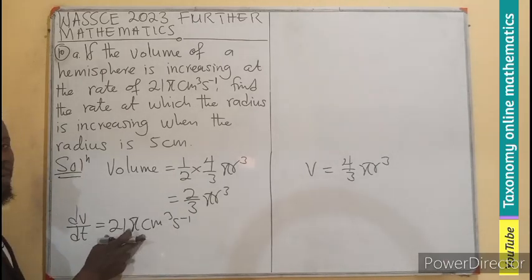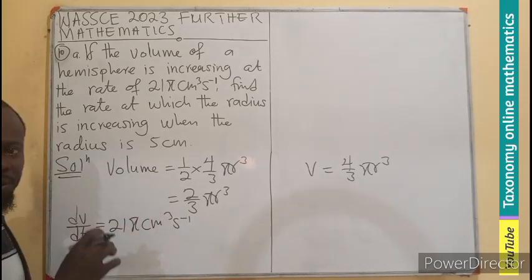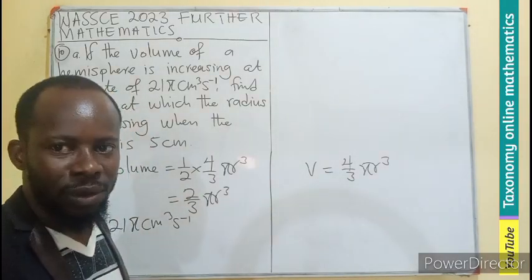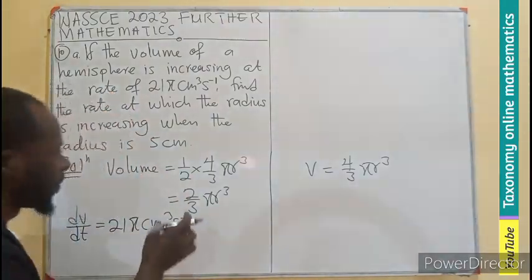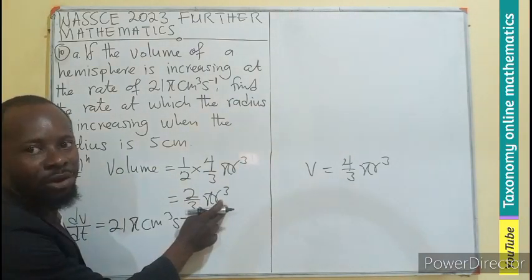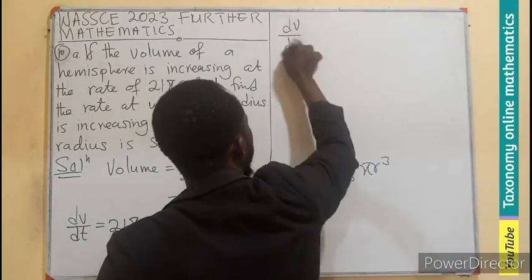Now, if this is the rate of change, then we are also looking for the radius. What is the connection between the volume and the radius? We can also find the rate of change of the volume with respect to what? The radius. We can find dV/dr.